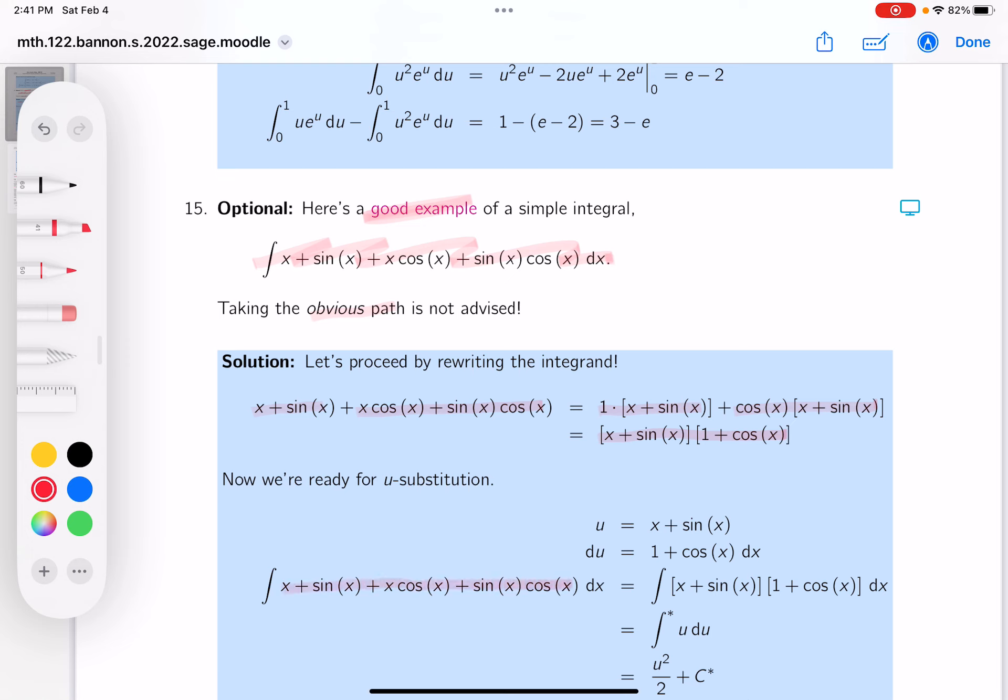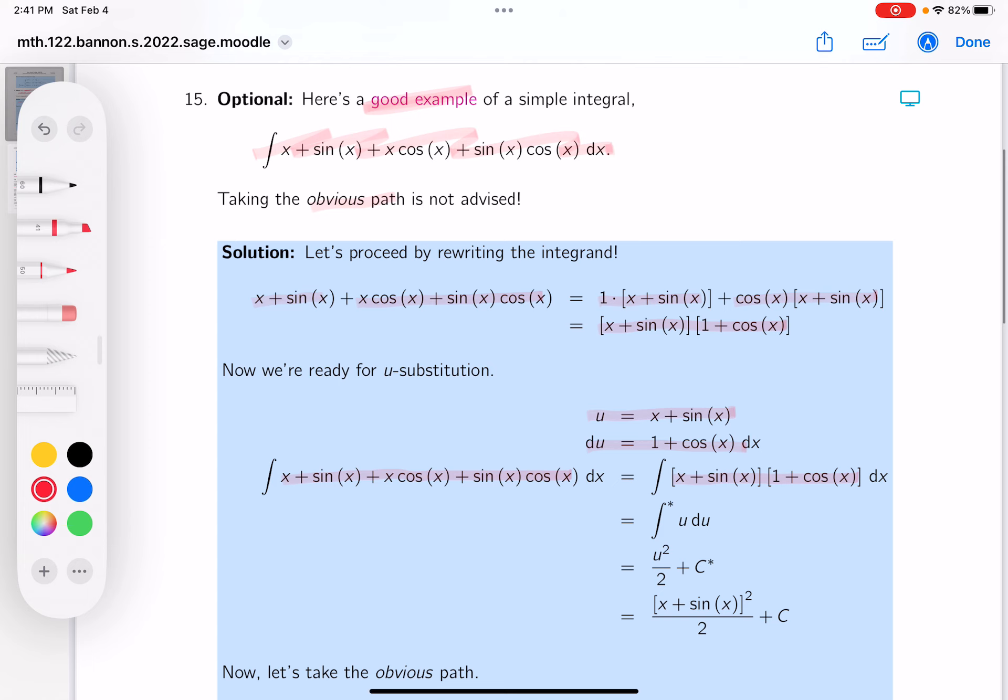So again, let's take a look at that. I put this down, the factored form of the integrand down. I let u equal x plus sine x, and du equal that, of course, pretty simple. You get something really simple, and you get this over here. I mean, it's really simple, if you saw it.